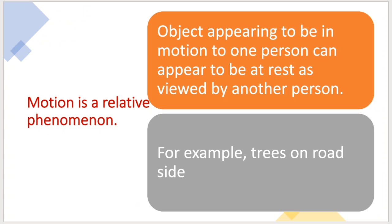Motion is a relative phenomenon. An object appearing to be in motion to one person can appear to be at rest as viewed by another person. For example, trees on the roadside — if you are standing on the roadside, the trees are at rest.